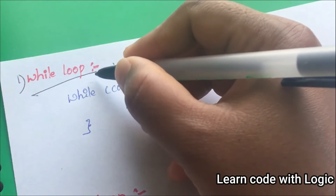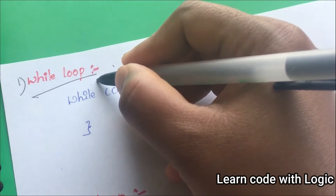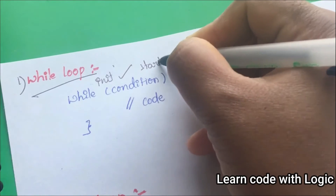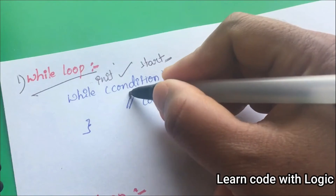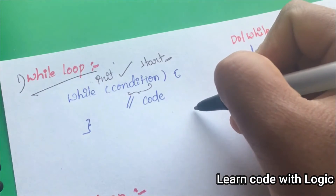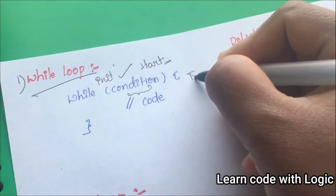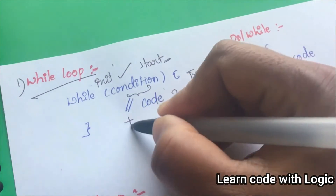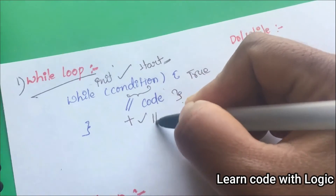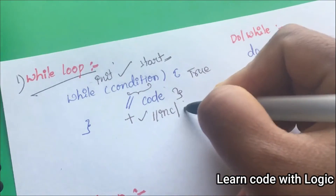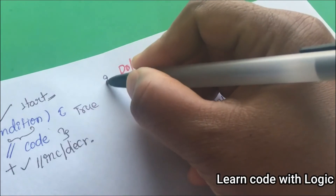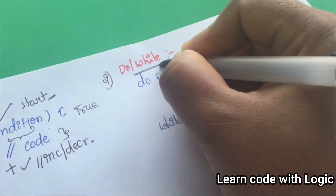The first one is the while loop. The syntax of the while loop is: first we need to initialize the variable — this is the starting point. Then we need to give the condition; if the condition is true, it performs the execution of the code. In addition, we also give an increment or decrement operator. This is pretty much the basic syntax for the while loop.